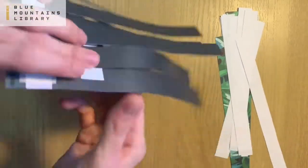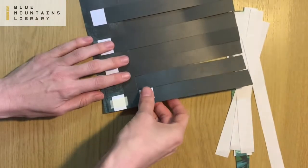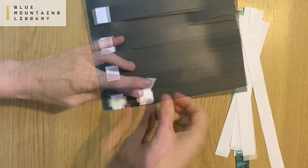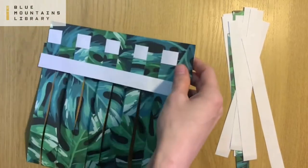Your third strip is going to weave the same way the top one did. So you're just going to keep weaving over and under opposite to the strip directly above.